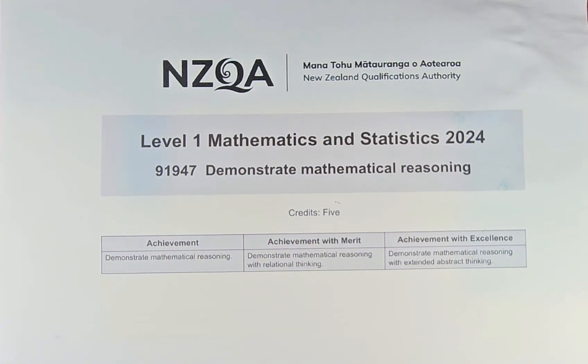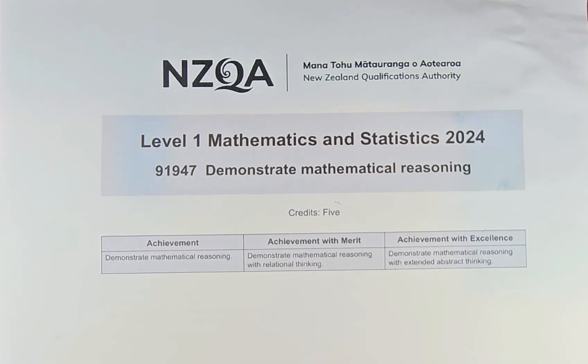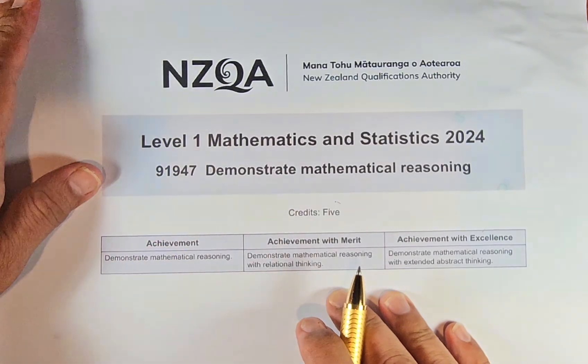Good day! In this video, we are going to do question 3C part 2 of the 2024 Demonstrate Mathematical Reasoning NCA Level 1 paper. This paper is worth 5 credits, and now we're going to recap what is happening in 3C part 2.